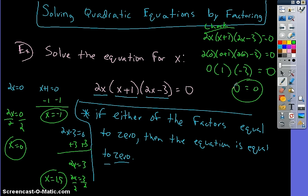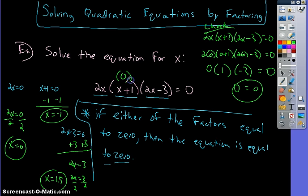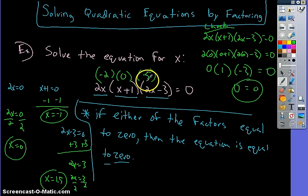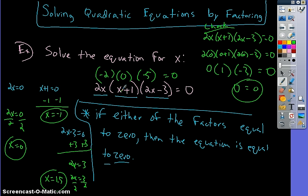By plugging in negative 1, you get negative 1 plus 1, which is 0. So you get 0 times negative 2 times negative 5, which is still 0 — so it also works. The same logic goes for 1.5 — that factor makes the whole equation equal to 0. So when it's already factored, just set each factor equal to 0.